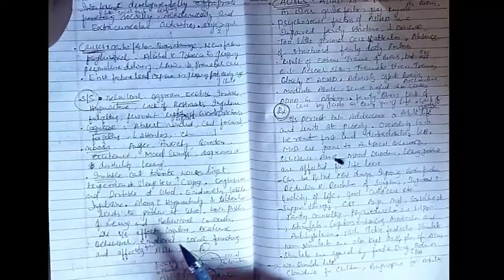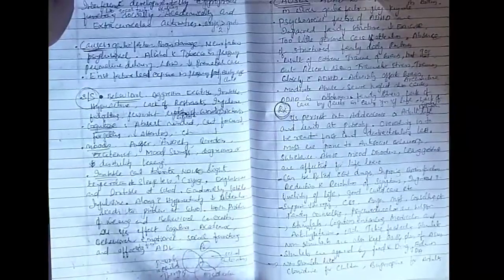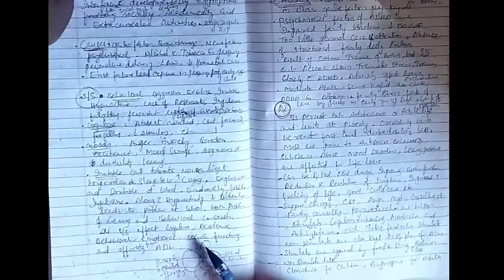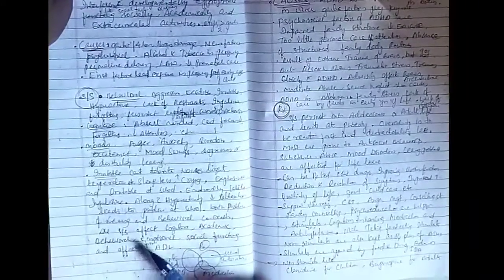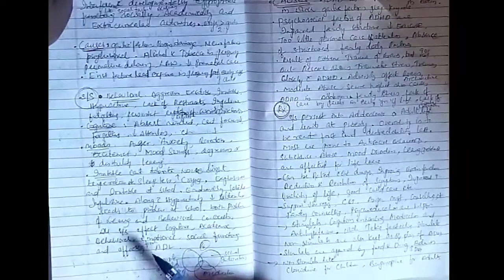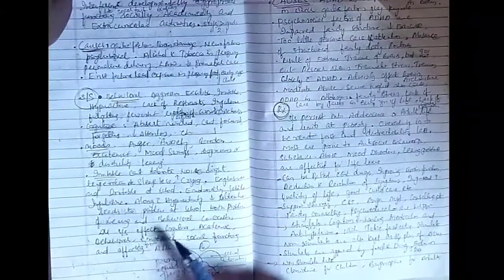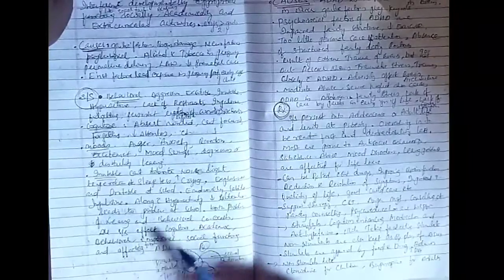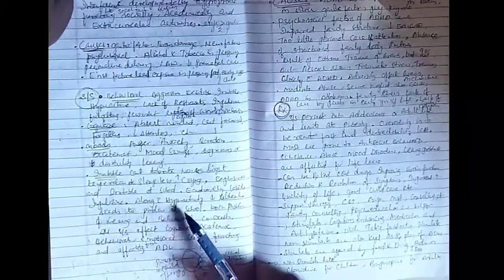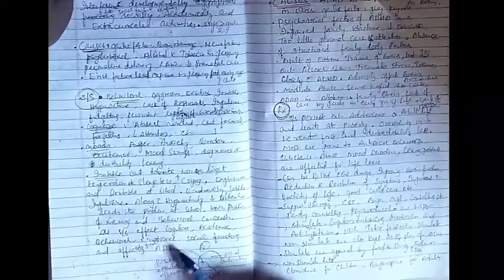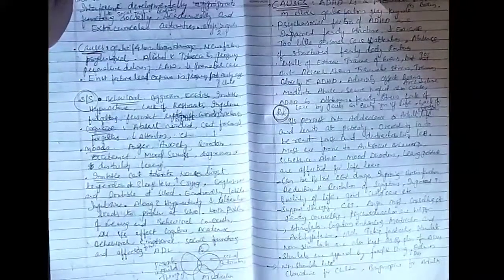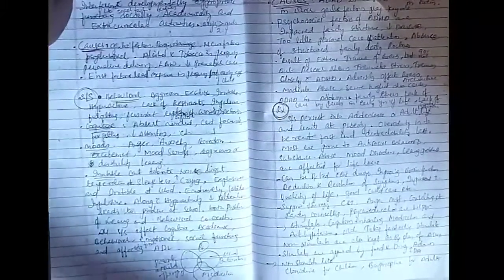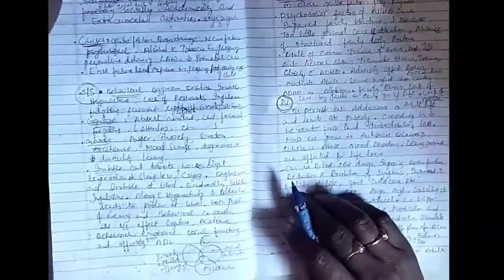All the signs and symptoms affect the cognitive, academic, behavioral, emotional, and social functioning of the child or adolescent. Thus they all will affect the ADL. ADL means activities of daily living: normal functions like bathing, eating, reading, studying. All these things are called ADL. Even this will affect the ADL, where the child cannot cope up with normal life.